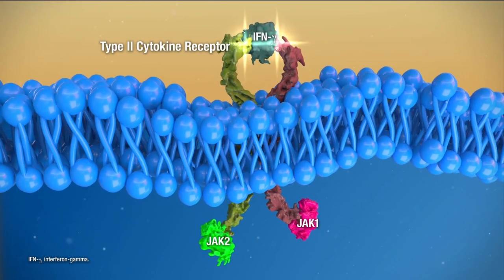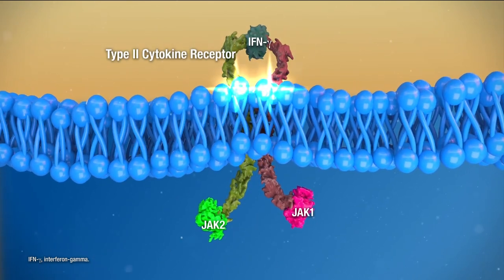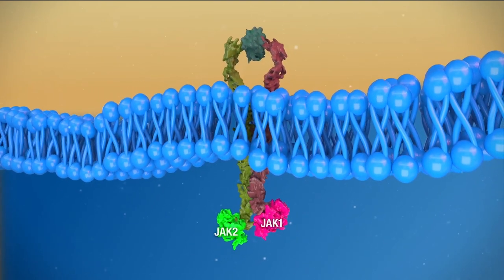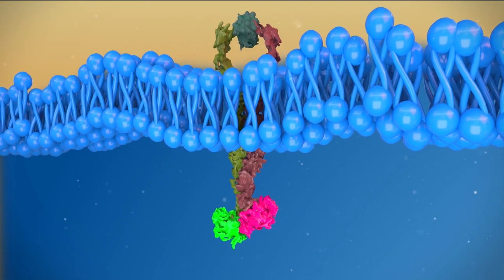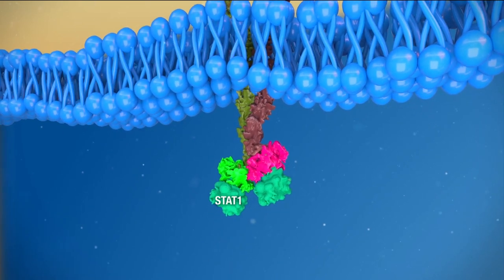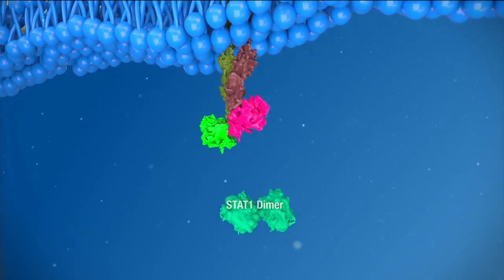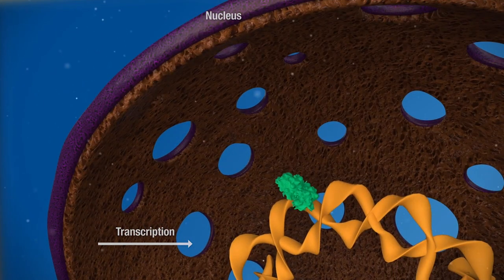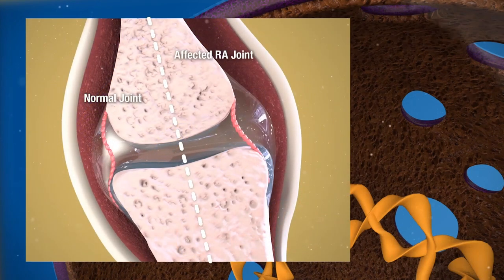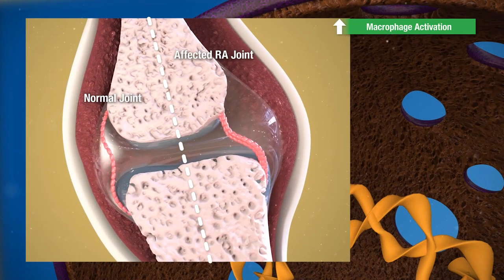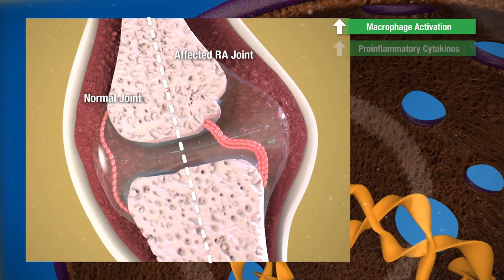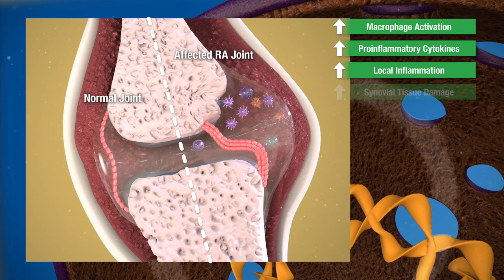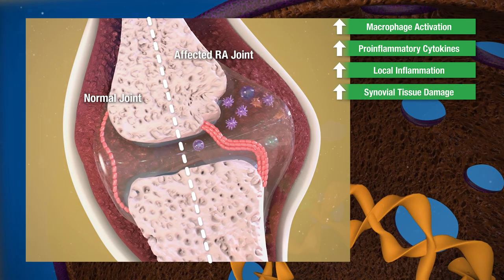For example, binding of the pro-inflammatory cytokine interferon gamma to its receptor activates JAK1 and JAK2, which in turn leads to the phosphorylation of STAT1. STAT1 dimers translocate to the nucleus, bind to interferon gamma target gene promoters, and stimulate the transcription of several genes involved in macrophage activation within the RA synovial tissue, resulting in the upregulation of pro-inflammatory cytokines, local inflammation, and synovial tissue damage.